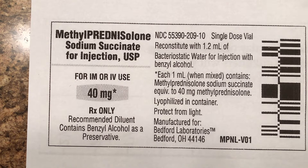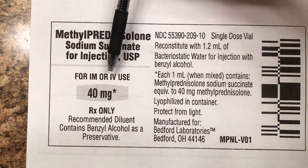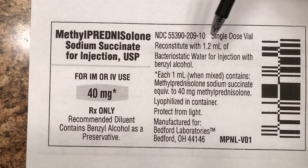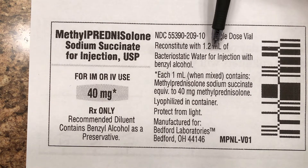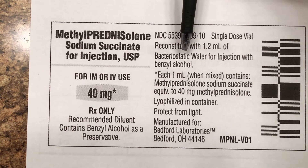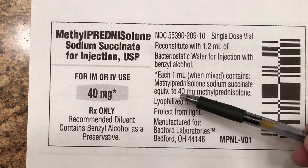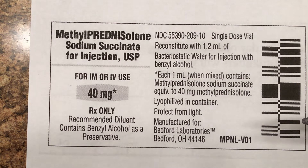Here's another one — methylprednisolone. It tells you it can be given IM or IV only; no other route is permissible. There are 40 milligrams of powder medication in the bottle. To reconstitute, add 1.2 milliliters of bacteriostatic water — sometimes that diluent comes with the package, sometimes it doesn't. After mixing, each one milliliter contains 40 milligrams, so the dosage strength is 40 milligrams per milliliter.